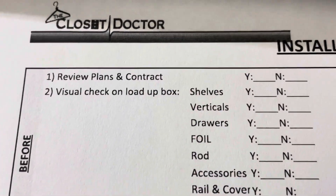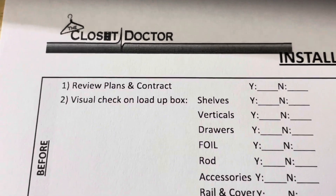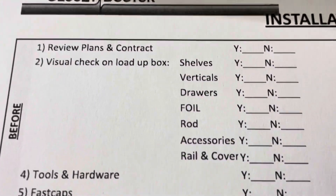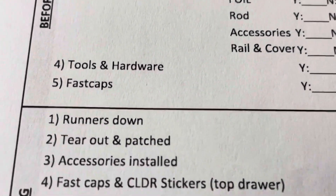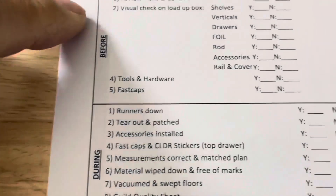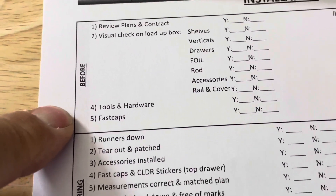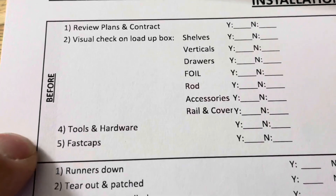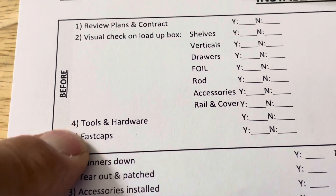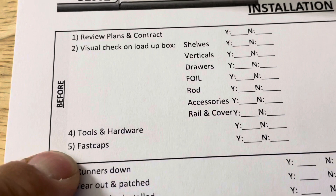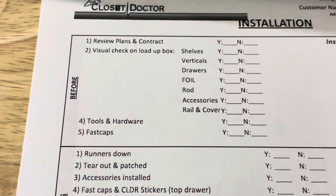The first thing the installer is supposed to do is go over their plans and contracts so they know what they're doing — a visual check that they've got everything. There's a note on there for FastCap. They're supposed to go through this before they leave the shop. Every now and then I'll get a call saying they left tools or were short on FastCaps. I ask: did you go over your checklist? And the answer is no — so we follow up on this.